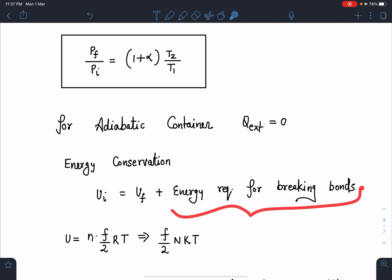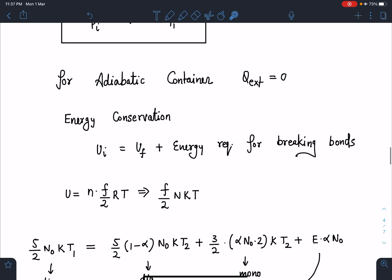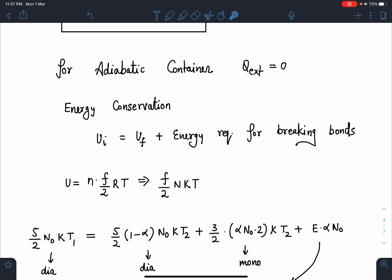Internal energy of the gas can be written as n(f/2)RT where f is the degrees of freedom and n is the number of moles. So n times R I can write as capital N times k where capital N is number of molecules times k, the Boltzmann constant. So (f/2)NkT is the internal energy.